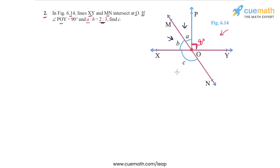Using this, we have to find angle C, this angle here. The way we will solve this is: we will first find the measures of angle A and angle B, and once we have angle B, we can find angle C because angle B and angle C form a linear pair of angles, as they are on the line MN. So let's start with finding angle A and angle B.